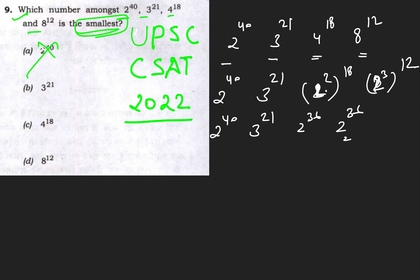Here's another method to compare 2^36 and 3^21. You can simplify by dividing both exponents by 3—divide 36 by 3 to get 12, and 21 by 3 to get 7. So you get 2^12 versus 3^7, which are smaller numbers you can calculate.